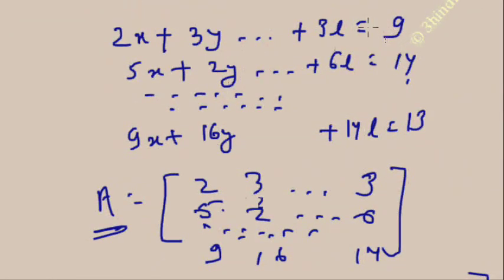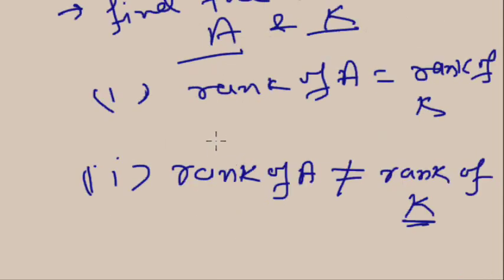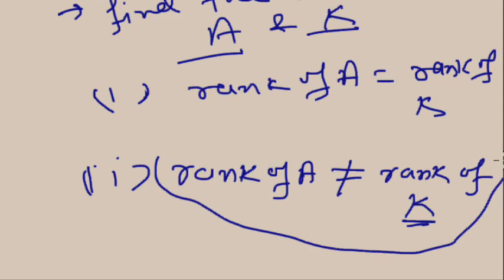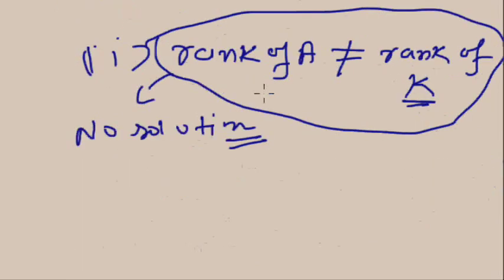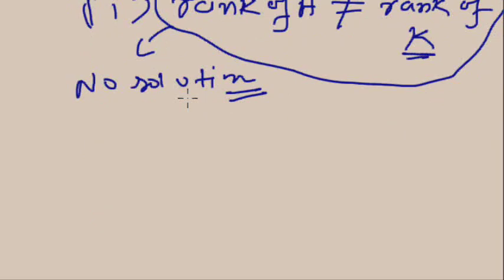When rank of A is not equal to rank of K, it is certain that all the equations are inconsistent. You will not get any values of x, y, or other variables that satisfy all the equations. So remember: a necessary condition to get a solution is that rank of A and rank of K must be equal. In this situation there is no solution.